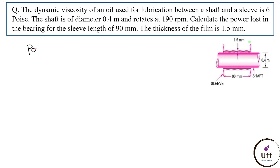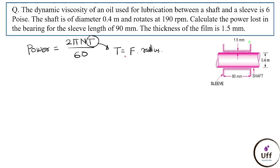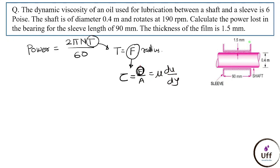To find power, use P = 2πNT/60. We don't have torque T, so we find torque as T = F × r. To find force, use Newton's law of viscosity: τ = F/A = μ(du/dy). Using force we find torque, and using torque we find power.